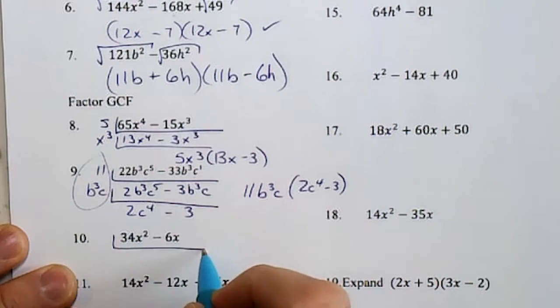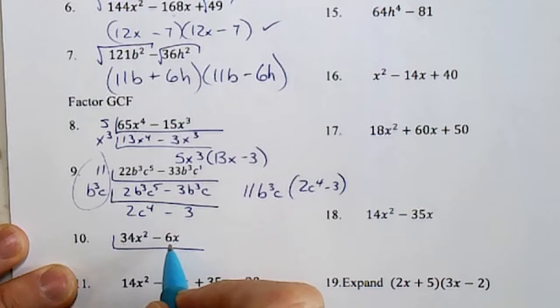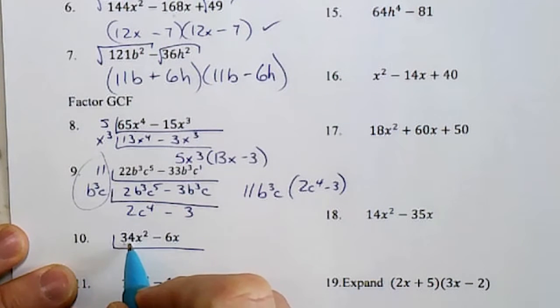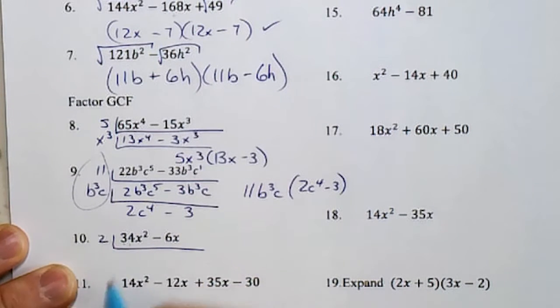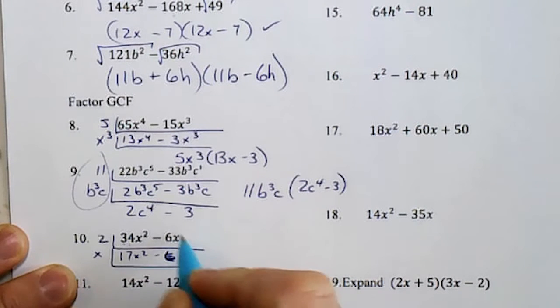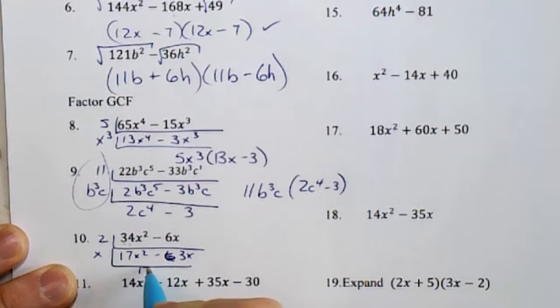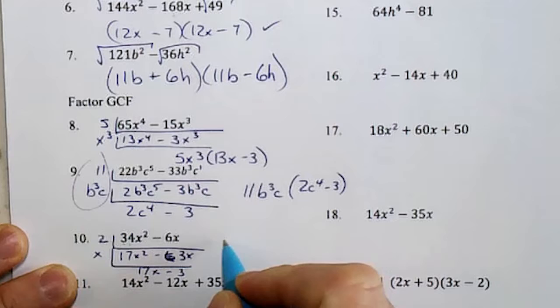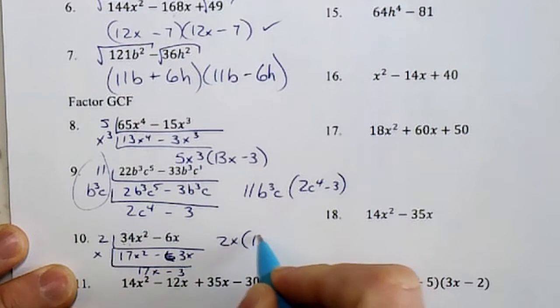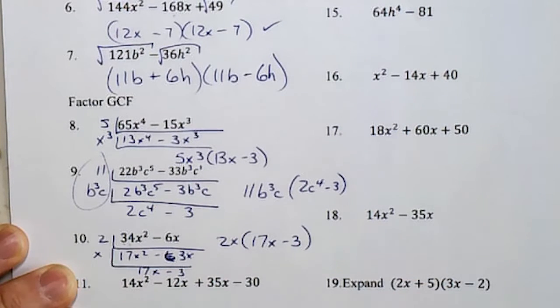This one here, same thing. 34 and 6. 6 does not go into 34, but 2 does. Take out an x, I can only take out 1. Final answer, GCF in front, like that.